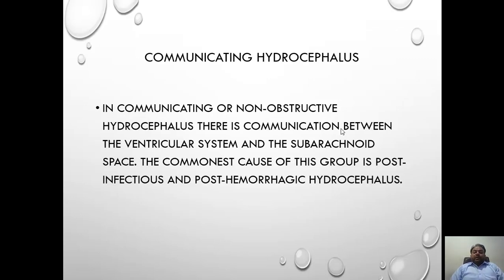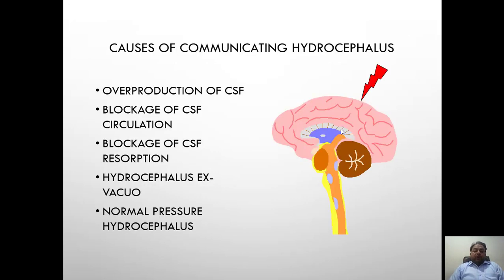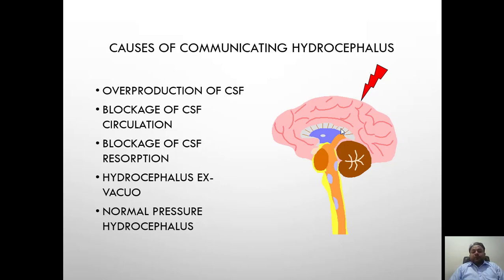There are two types of hydrocephalus. One is communicating hydrocephalus, meaning there is communication between the ventricles and the subarachnoid space. Common causes include overproduction of CSF — for example, choroid plexus papilloma — blockage of CSF circulation — for example, due to very high proteins in the CSF as in meningitis — and blockage of CSF reabsorption. I will define all of these terms in the coming slides.